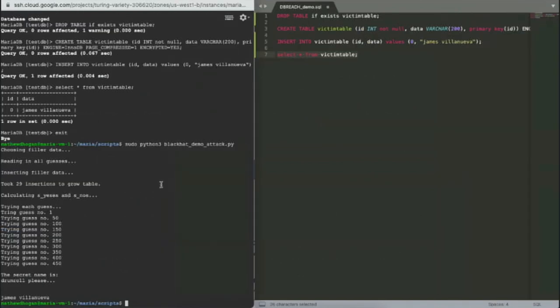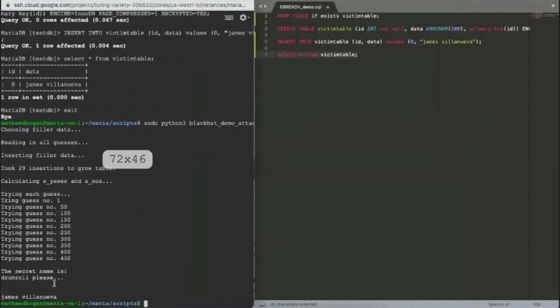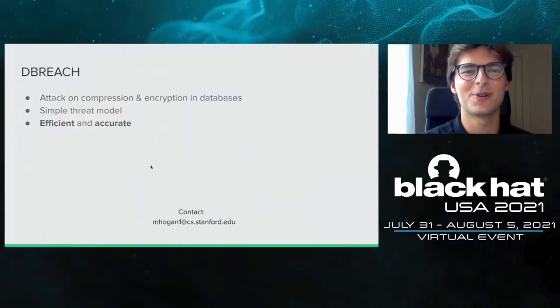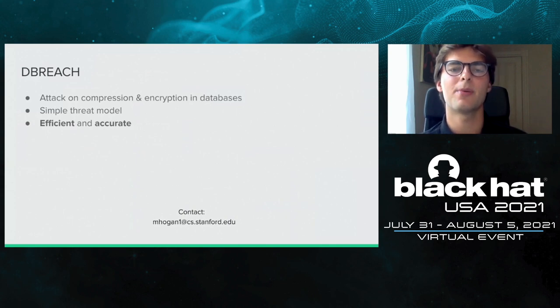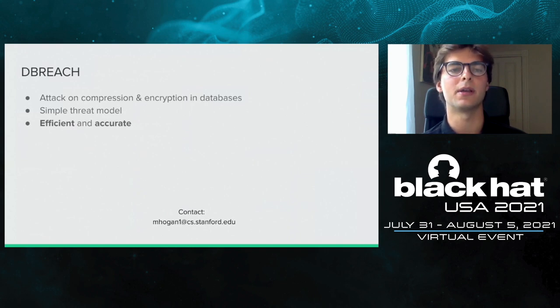Checking back on our demo — it was able to uncover the secret name James Villanueva, which is what we inserted. In summary, Deep Reach is an attack on compression and encryption in databases. It derives from a simple and achievable threat model, and it is efficient and accurate. We believe this really drives home the point that compression and encryption should be combined very carefully, lest you fall victim to a compression side channel attack. It also raises the question of what other contexts beyond databases and web security may be vulnerable to such attacks — plenty of opportunities for future work. Thank you.